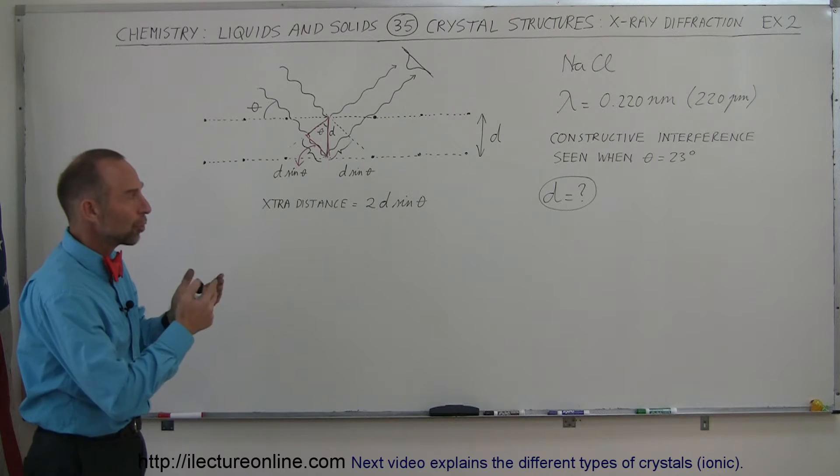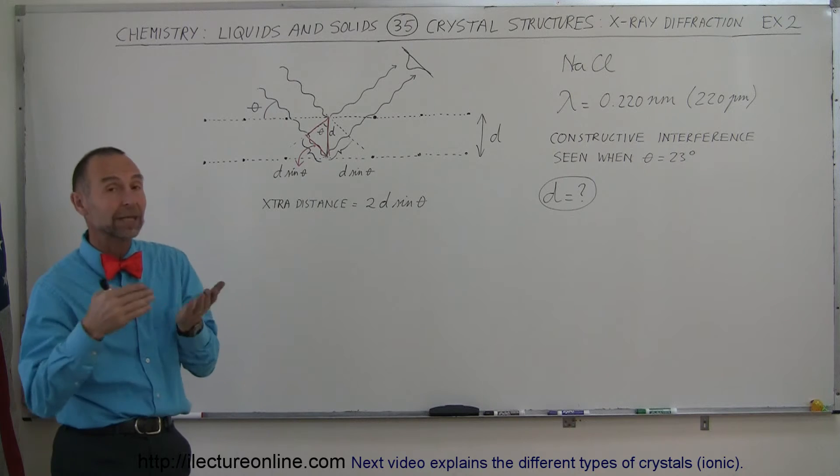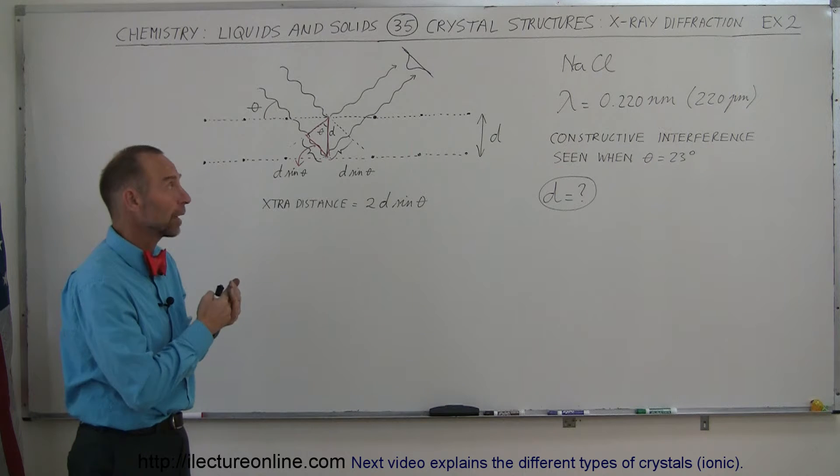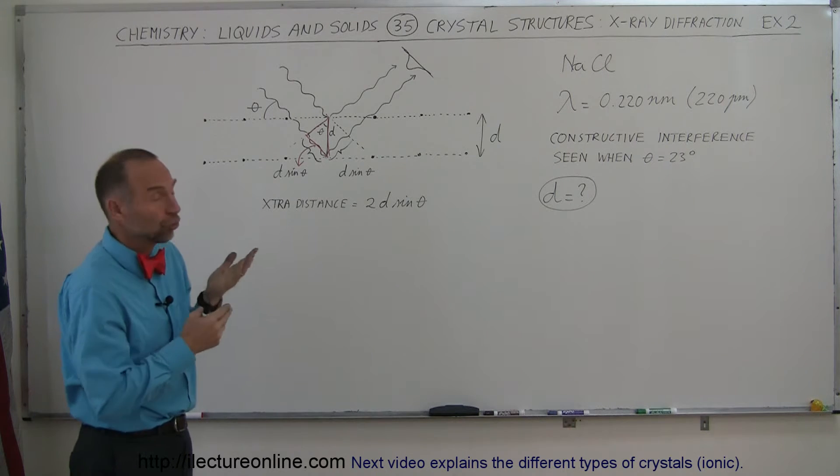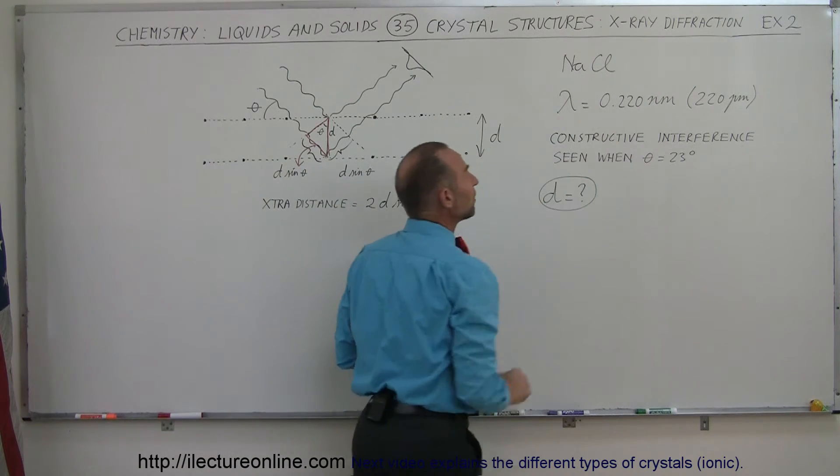In this example we're going to show you how to find the separation distance between the sodium and chlorine ions in a sodium chloride structure, assuming that we're bombarding it with x-rays at 0.22 nanometers,